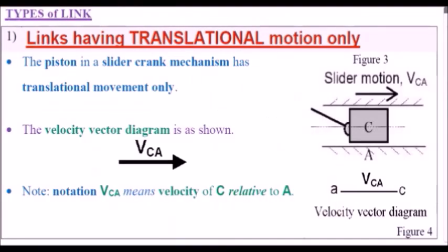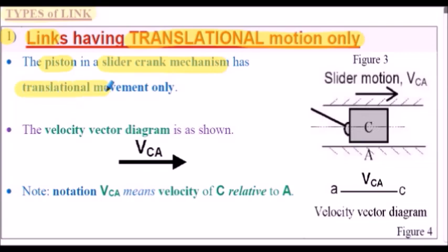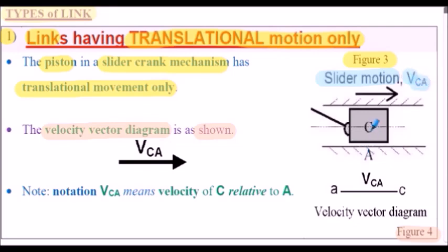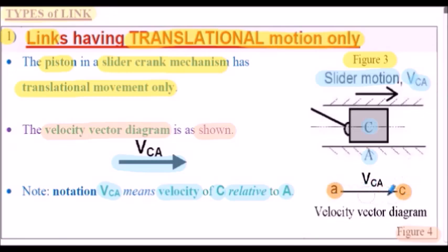Let's consider the various types of link in our mechanism. Here's a Type 1 or Class 1 linkage — links that have translational motion only. A piston in a slider-crank mechanism has translational movement only, as shown in Figure 3. The velocity vector diagram is as shown in Figure 4. The slider's motion, labeled as velocity C relative to A (VCA), is indicated by an arrow. Note the notation VCA means velocity of C relative to A. The velocity vector diagram will simply be drawn as a horizontal line between A and C. Notice there are no arrowheads on the velocity vector diagram, and lowercase letters are always used.